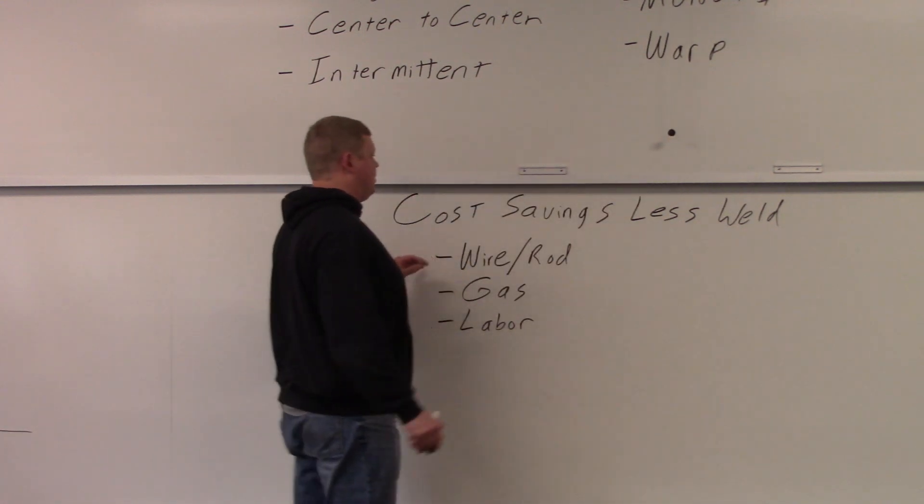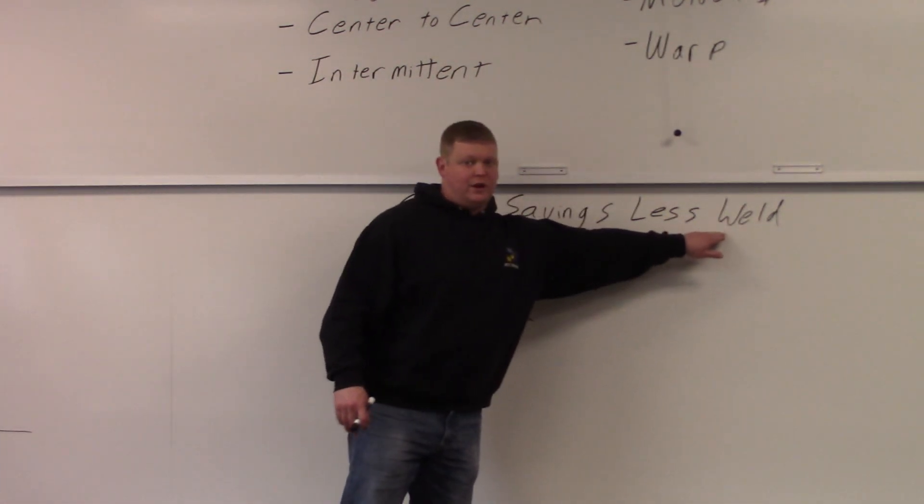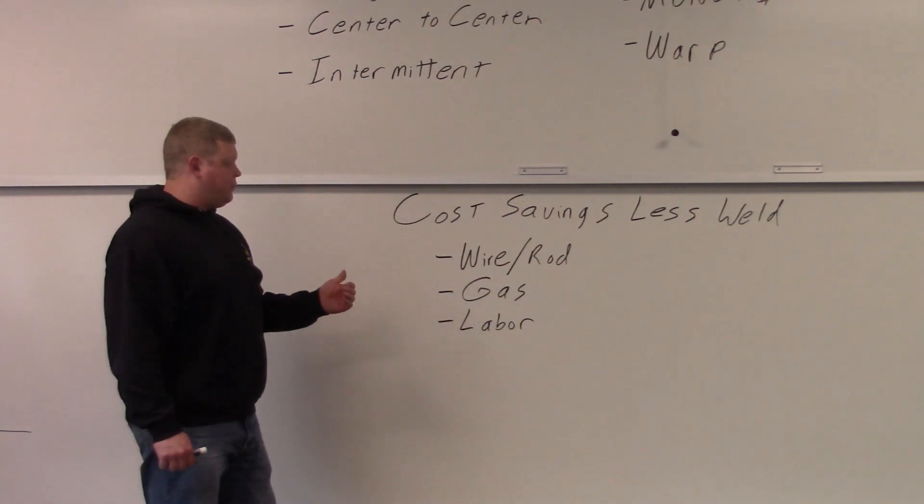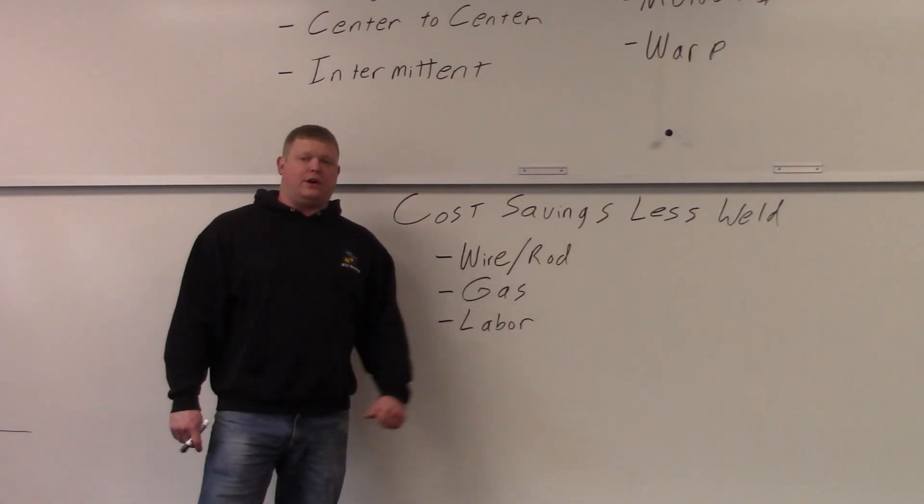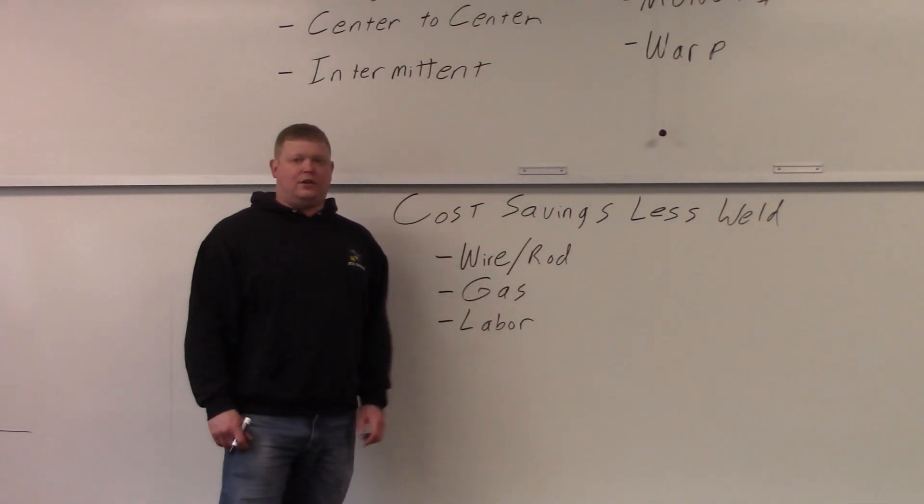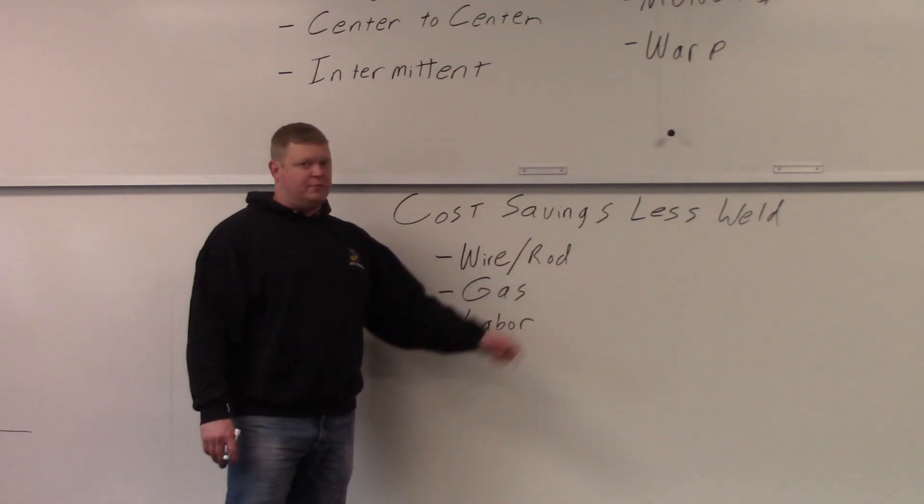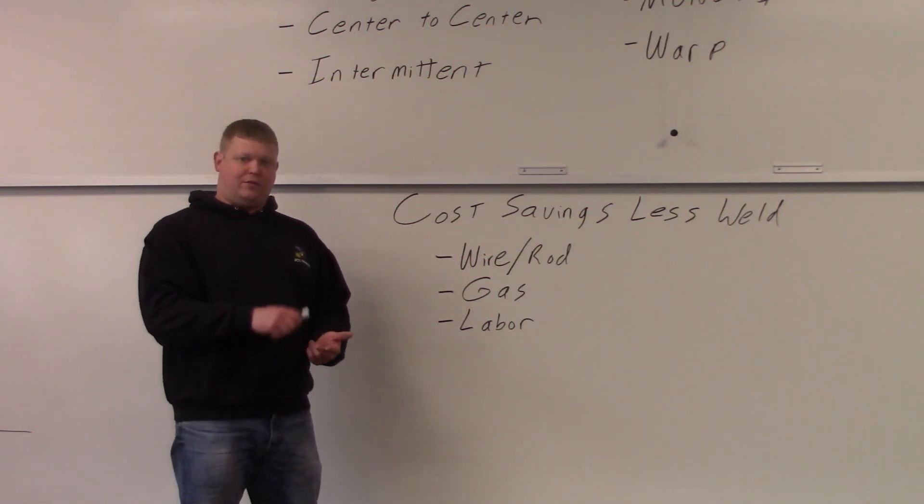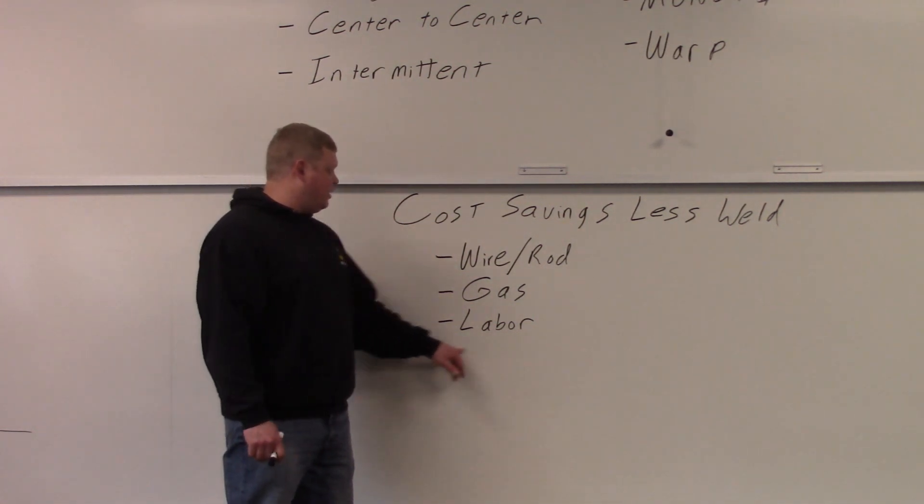So what we were talking about earlier with money costs savings with less weld, right? Things that you're going to save on by doing a staggered weld, first and foremost wire or rod if you're doing a stick. You're not putting that wire or rod into the weld so that you're saving money on that because wire and rod cost money, right? Gas, if you're doing tig or mig.